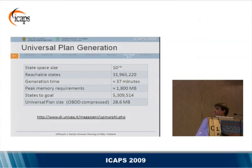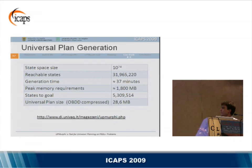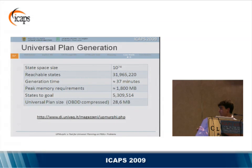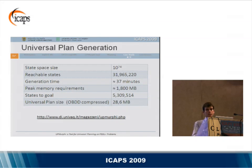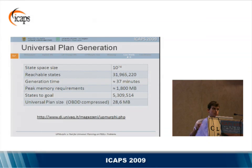The table shows the results of our generation. The first row shows the state space size, which is quite huge and derives from the ranges of continuous variables. However, the set of reachable states is a very small portion of the entire state space. We generated the solution in about 40 minutes and found about five million plans from reachable states to the goal. This is the size of the universal plan, which has been compressed through a methodology based on BDDs — Binary Decision Diagrams. More details and the set of plans in PDDL+ are available on the website.